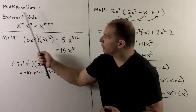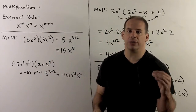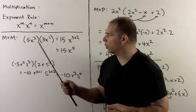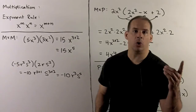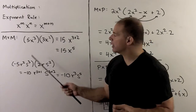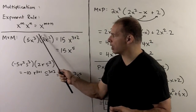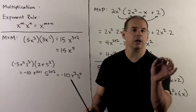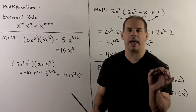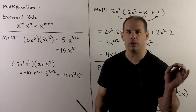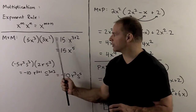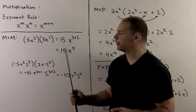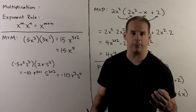If I want to multiply polynomials, we approach it in three stages. First stage: monomial times monomial. Monomials are just single terms — a number times some power of x. So if I take 5x cubed times 3x squared, I put the numbers together and multiply, put the powers of x together and multiply. 5 times 3 is 15, x cubed times x squared is x to the 3 plus 2. So we have 15x to the 5th power.